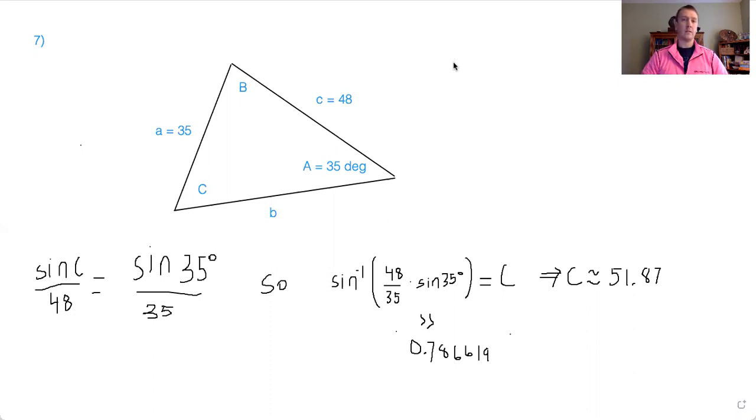And this is in the law of sines section. So right away, what you want to do is set up that law of sines ratio equality. For me, I picked angle C because it's opposite the side that's known, 48. We don't know anything about side B or angle B.